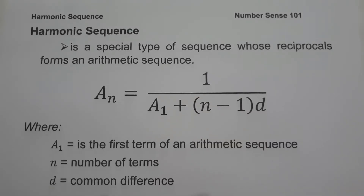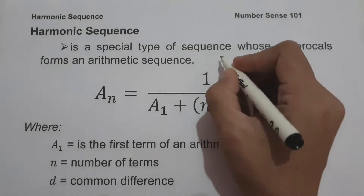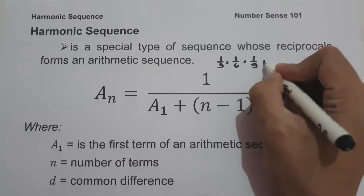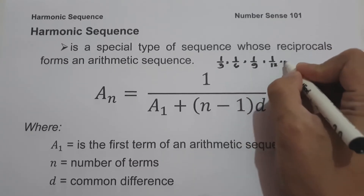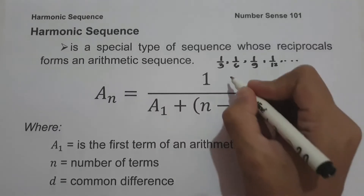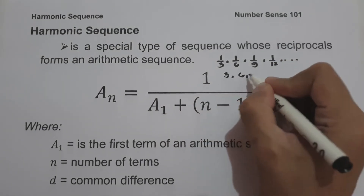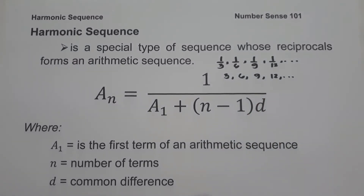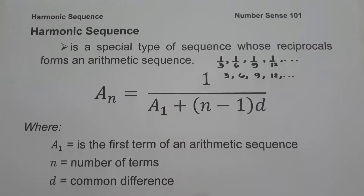For today's video we are going to talk about what is harmonic sequence. A harmonic sequence is a special type of sequence whose reciprocals form an arithmetic sequence. For example, the sequence 1/3, 1/6, 1/9, 1/12 is an example of a harmonic sequence. If you find its reciprocals, you get 3, 6, 9, 12, which forms an arithmetic sequence.